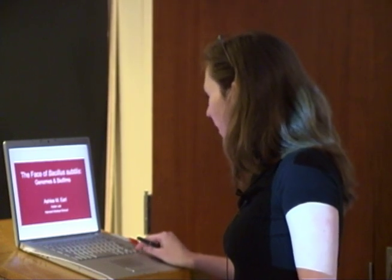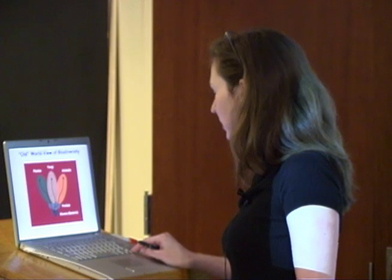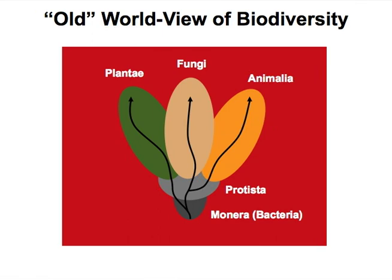To really begin, I thought I would step back and do a little history lesson, revisiting our old world view of biodiversity on the planet. This is Whitaker's view from about 1970. He saw biodiversity in five different kingdoms, where plants, fungi, and animals largely predominated. Underneath that we had a small group of protists, and at the very bottom, making up a very small fraction, was the group containing what we consider bacteria.